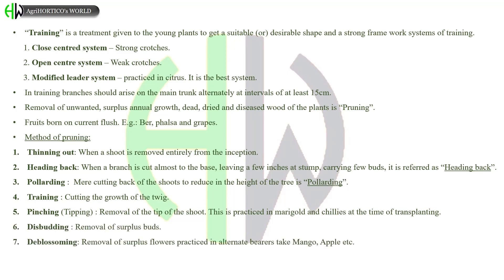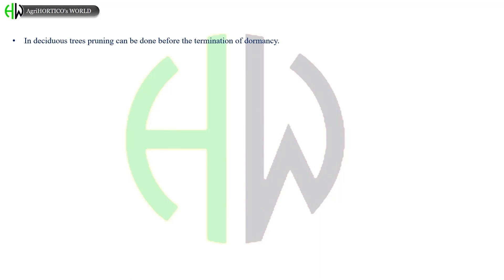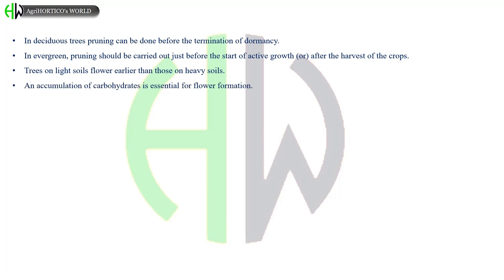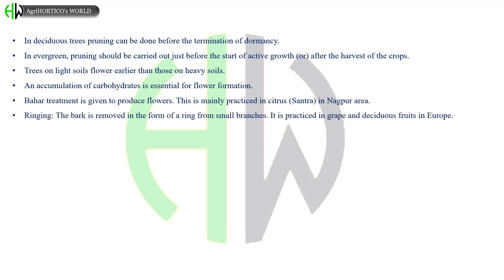De-blossoming is the removal of surplus flowers and is practiced in alternate bearers. Examples are mango, apple. In deciduous trees, pruning can be done before the termination of dormancy, whereas in evergreens, pruning should be carried out just before the start of active growth or after the harvest of the crops. Trees on light soils flower earlier than those on heavy soils. Accumulation of carbohydrates is essential for flower formation. Bahar treatment is given to produce flowers. This is mainly practiced in citrus, santara in Nagpur area, and also in guava. In ringing, the bark is removed in the form of a ring from small branches. It is practiced in grape and deciduous fruits. Ethrel smudging is an oxidized hydrocarbon like acetylene and ethylene and often induce flower bud formation. It is a practice based on this principle. Variety Romani prefers Himayuddin poles.